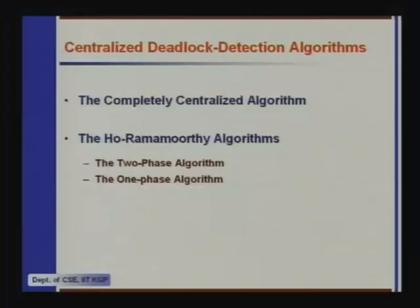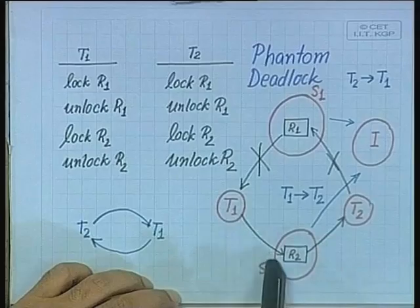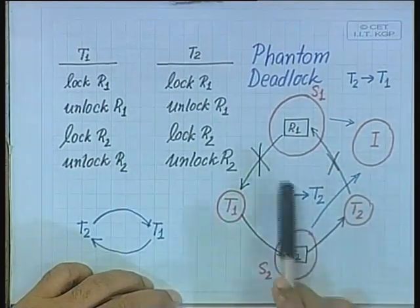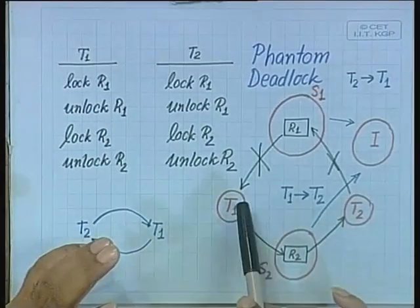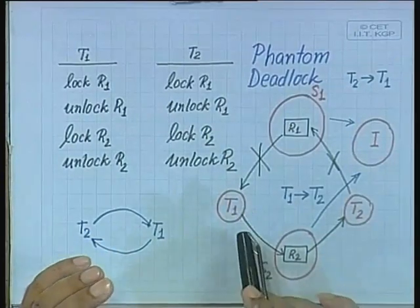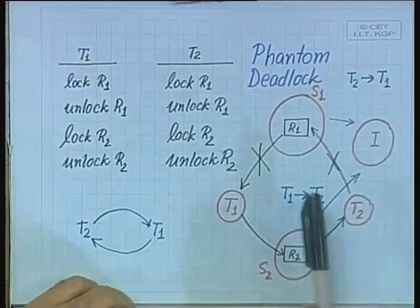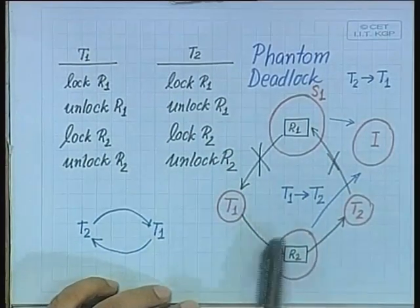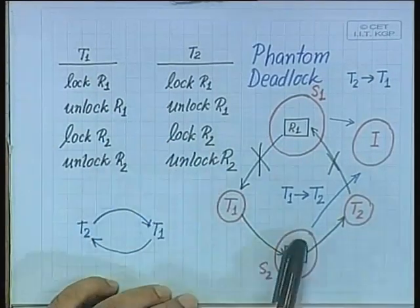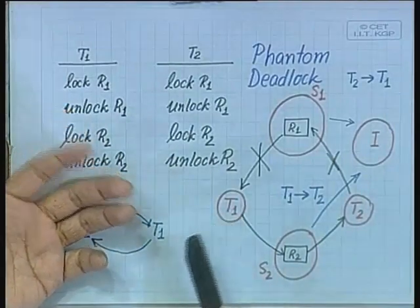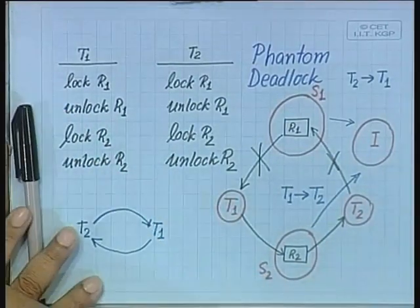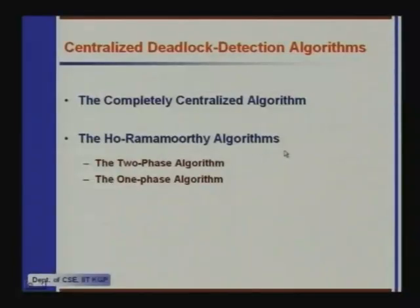In our example, if we run it again, next time we will find that this dependency is not there, so we say this is not a deadlock. But is this algorithm correct? No, it is not correct, because what may happen is that everything completes and then the same scenario repeats itself, and when you capture the snapshot the second time you will get the same snapshot again. Therefore, the two-phase algorithm of Ho and Ramamurthy does not guarantee that false deadlocks will not be detected — it is still prone to phantom deadlocks.